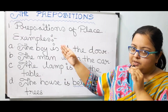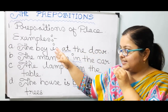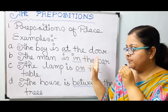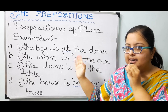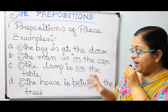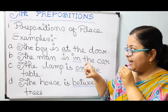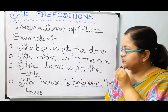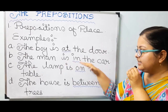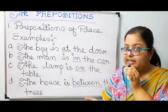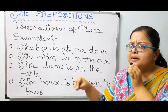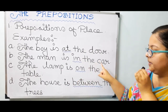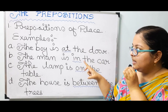Let's look at number one: prepositions of place. Example a: 'The boy is at the door.' Here 'at' is the preposition — where is the boy? The boy is at the door; he is standing at the door. Example b: 'The man is in the car.' Where is the man? He is sitting in the car — he is inside the car. So 'in' is the preposition here.